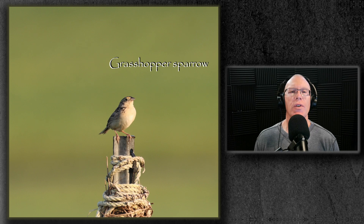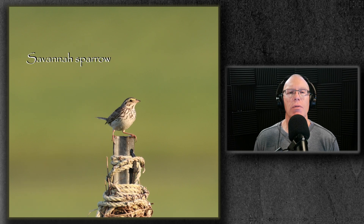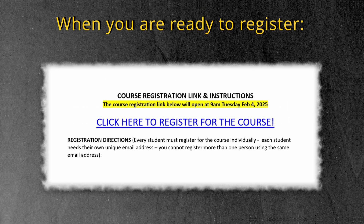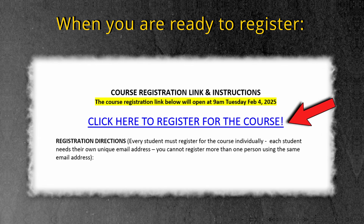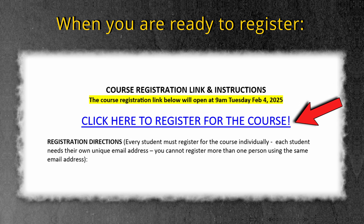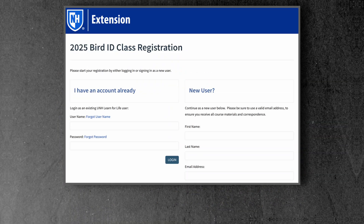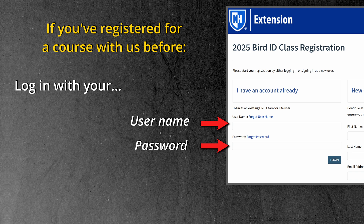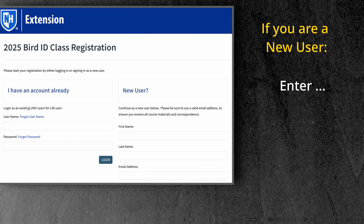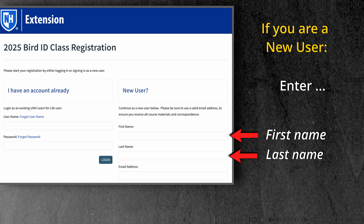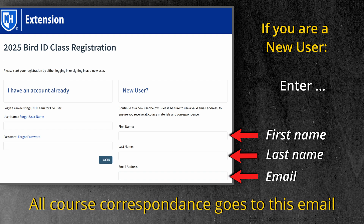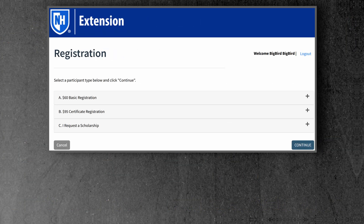Registration Instructions. I'll now walk you through the steps you will take to register for the course. Reviewing these steps now will help make your registration process go as smoothly as possible. When you're ready to register for the class, click on the Click Here to Register for the Course link that's on the last page of the course syllabus and schedule. This is the first page you'll see. If you've previously registered for a course with us, you'll log back in using your username and password. If you are new to our system, you will enter your first name, last name, and email address. Be sure you enter your correct email address here because this is the address to which all course correspondence will be sent.